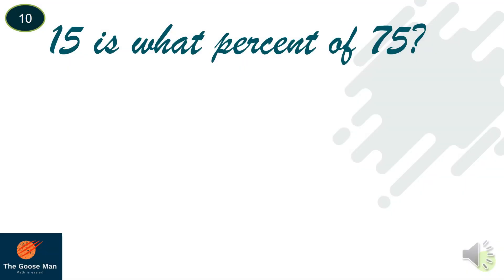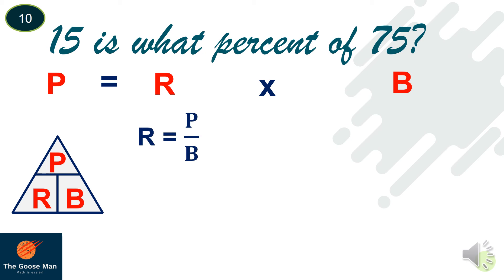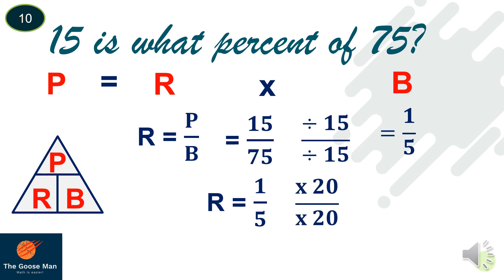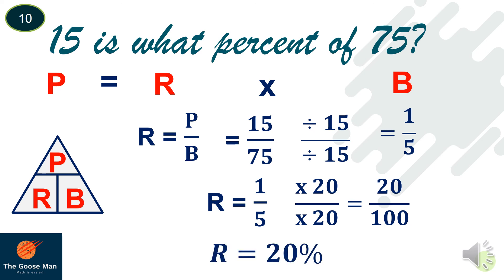Let's try another example: 15 is what percent of 75? 15 is the percentage, 'what percent' is the rate, and 75 is the base. Since we are looking for the rate: rate equals percentage divided by base, which is 15 over 75. Dividing numerator and denominator by 15 gives 1 over 5. Multiplying both by 20 to make the denominator 100 gives 20 over 100, which equals 20%.